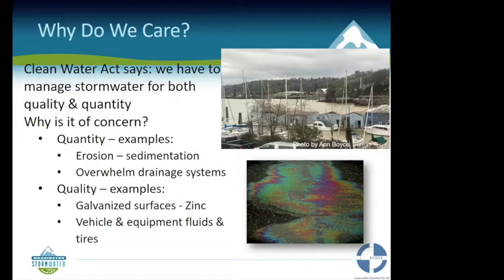Stormwater also overwhelms drainage systems and can cause overflows. Issues like galvanized surfaces contain zinc. WSU, through the Washington Stormwater Center, is finding that a high percentage of chemicals in stormwater come from tires. These chemicals are proprietary so we don't know exactly what many of them are, but they are causing major problems for the health of our waterways.